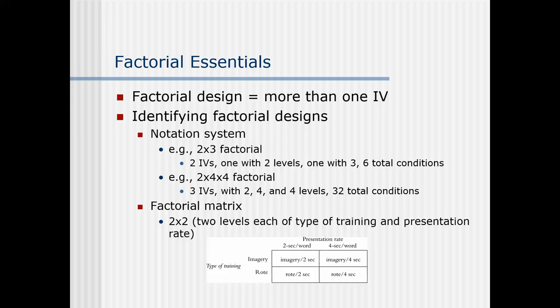It also works out because if you want to figure out how many conditions are in the experiment, just multiply two by three. So in a two-by-three factorial, there are six conditions. The number of numerals equals the number of independent variables. So for a two-by-three factorial, there are two independent variables. The first — 'two' — has two levels. The second — 'three' — has three levels.